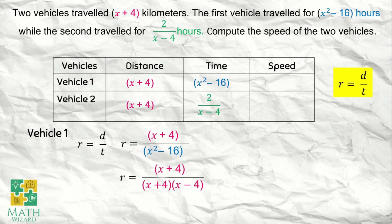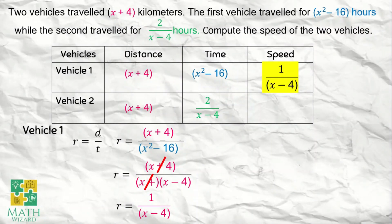Next, we need to simplify this by factoring. The numerator becomes x plus 4. The denominator, if we factor out x squared minus 16, this is the difference of two squares. It becomes x plus 4 and x minus 4. Next, we cancel out the common factors between the numerator and the denominator, which is x plus 4. Our final answer is rate equals 1 over x minus 4. Therefore, the speed of vehicle 1 is 1 over x minus 4.